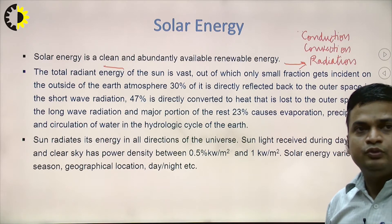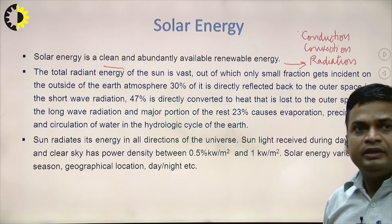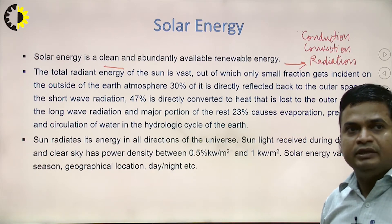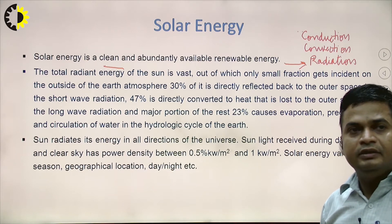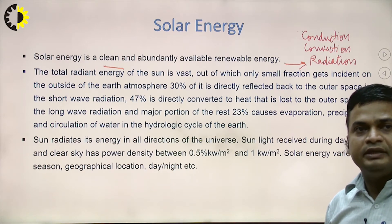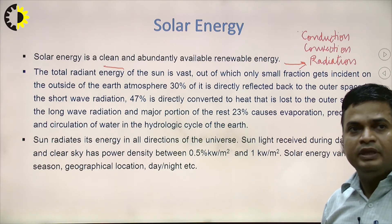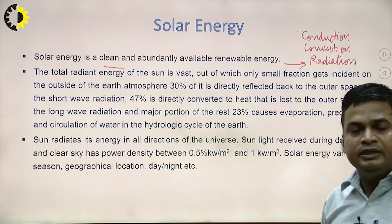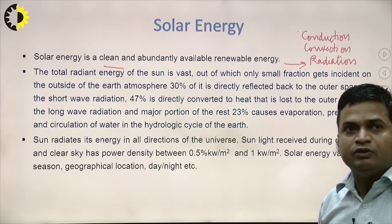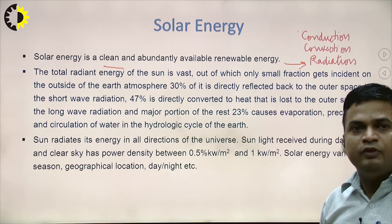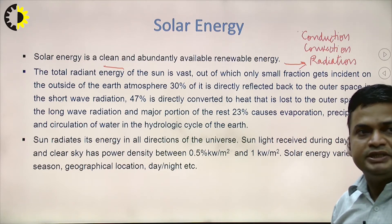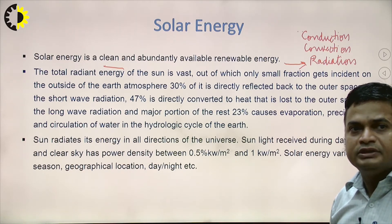This 23 percent energy is used to heat water, which then vaporizes into the atmosphere. Clouds form, and that water is converted from vapor back into liquid form. This liquid water is then used for different purposes — for the growth of plants, for human life, etc. So this energy causes evaporation, precipitation, and circulation of water in the hydrologic cycle of the earth.